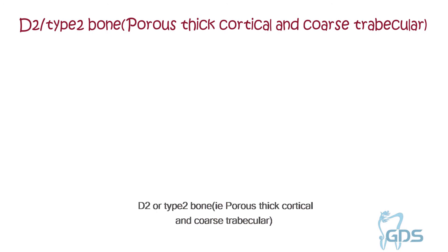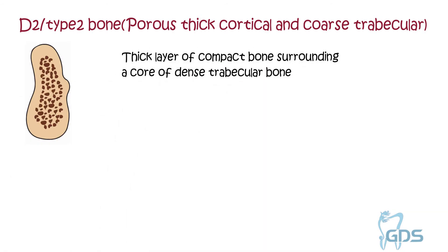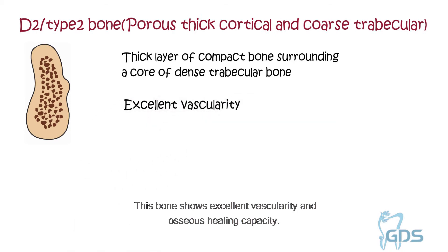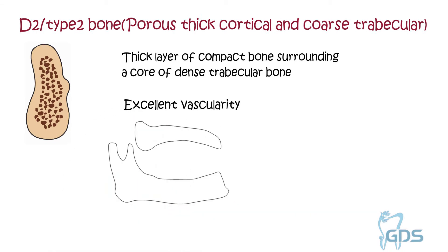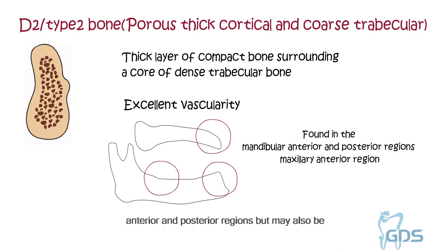The second type is D2, or type 2 bone, i.e. porous thick cortical and coarse trabecular. This bone shows a thick layer of compact bone surrounding a core of dense trabecular bone. This bone shows excellent vascularity and osseous healing capacity. It is most commonly found in the mandibular anterior and posterior regions but may also be present in the maxillary anterior region.